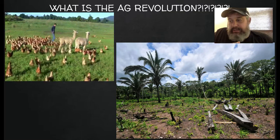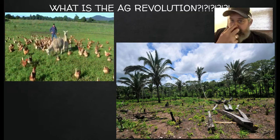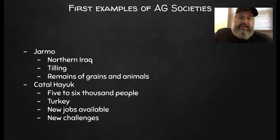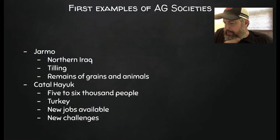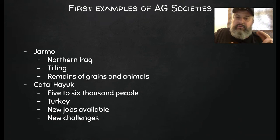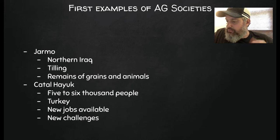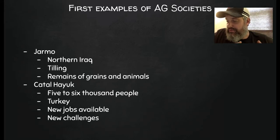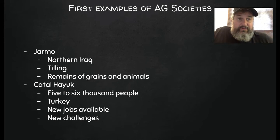One of the very first farming villages found is called Jarmo, and it's in northern Iraq. They found examples of tilling, remains of grains and animals — rye, wheat, lentils, barley — as well as remains of sheep, pigs, goats, and horses. It's a good possibility that people were there about 9,000 years ago, making large-scale farming that ancient.